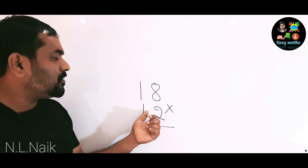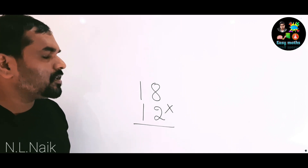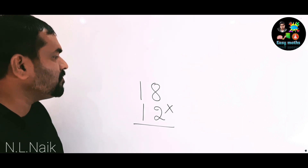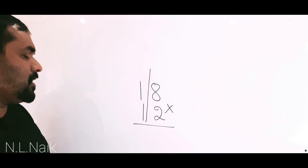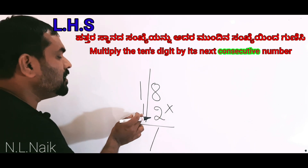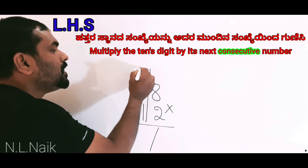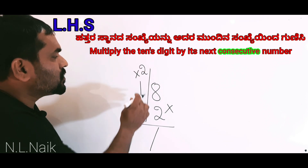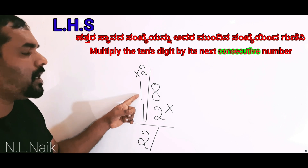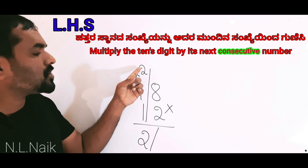The tens digit is 1 in both numbers. Here we will find the answer in two parts. For the LHS answer, we multiply the tens digit number by the digit one more than that — that is, the next consecutive number.